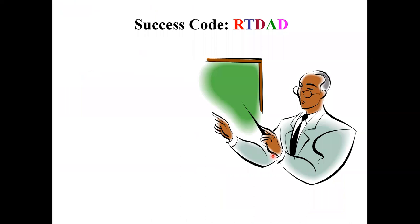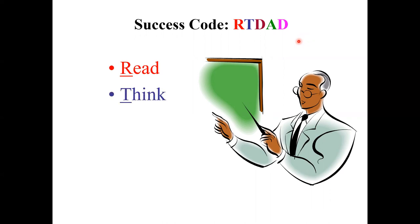Before I get to my lecture topic, I wanted to share the success code for postgraduate studies and research. I call that success code RTDAD. RTDAD stands for R for Reading — you have to read a lot — and while you read, you need to think. It cannot be just passive reading, so think while you read.